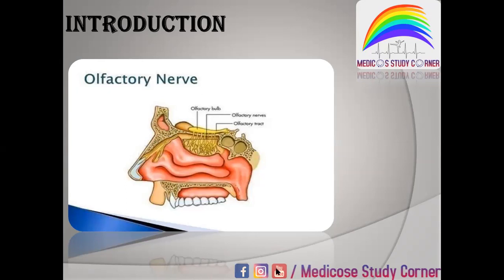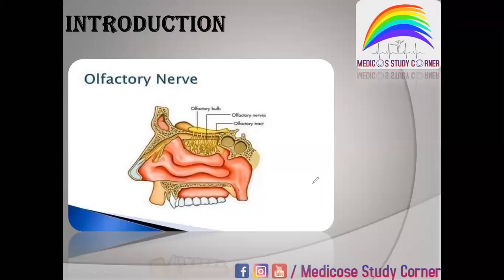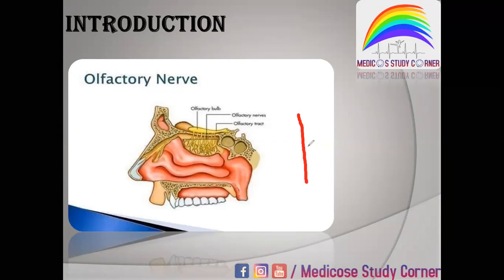We have to read its origin and then read its pathway. First of all, we know that our nasal cavity — in the nasal cavity there are cells. In those cells we have olfactory receptors. In olfactory receptors we have the sense of smell. We have olfactory cells here.